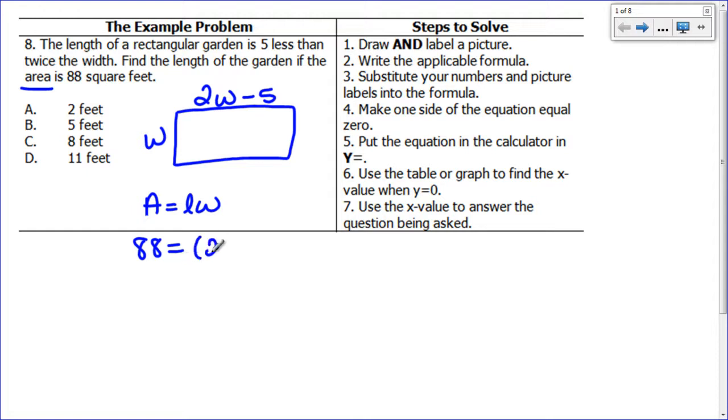Now I need to make it equal zero. So I'm going to have to subtract 88 from both sides. So I'm going to have 2W minus 5 times W minus 88 is equal to zero. So I subtracted this 88 from here and from over here, and that's how I got that.